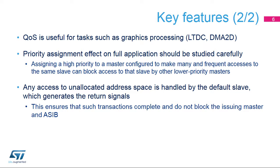This can be useful for real-time constrained tasks, such as graphics processing — LTDC or DMA2D. However, assigning a high priority to masters that can make many and frequent accesses to the same slave, such as the Cortex-M7 CPU, can block access to that slave by other lower priority masters.